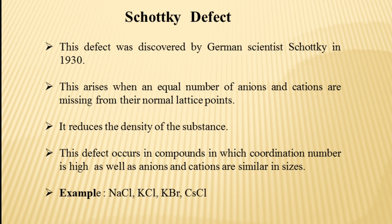This defect occurs in compounds in which the coordination number is high and cations and anions are similar in size. For example, alkali metal halides like sodium chloride, potassium chloride, potassium bromide, and cesium chloride — all these show Schottky defect.